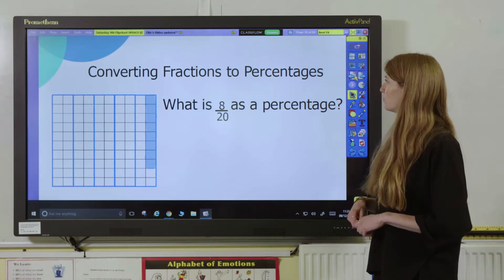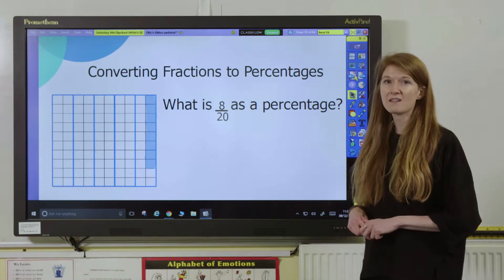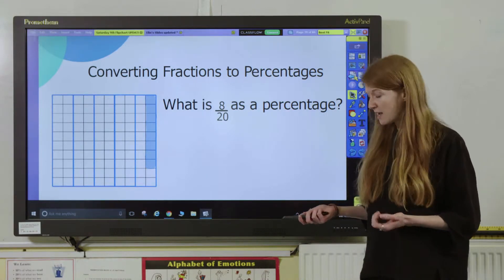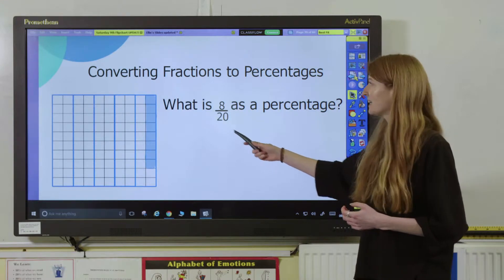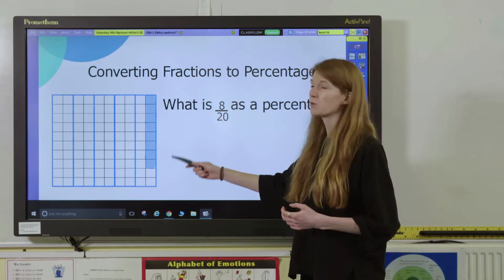So, first of all, we have 8 twentieths, and we need to convert that into a percentage. I've represented the fraction 8 twentieths by shading 8 out of my 20 squares.